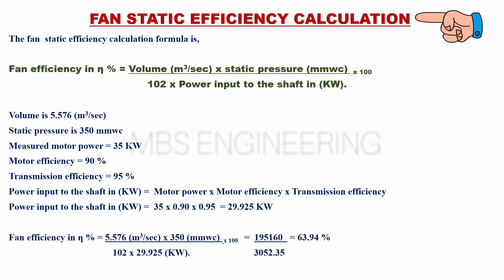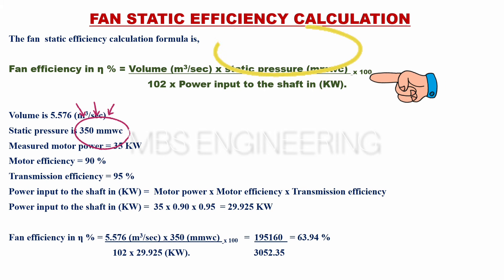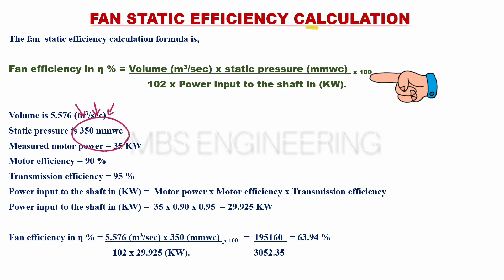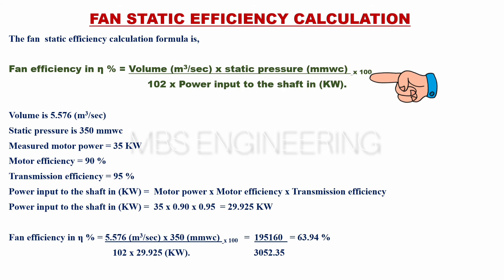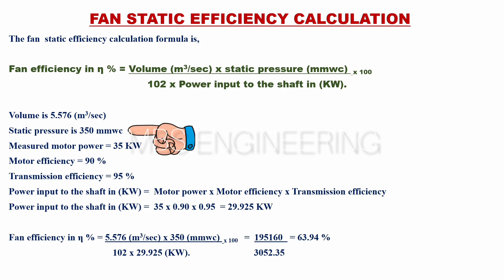We now calculate the fan static efficiency. The fan static efficiency formula is the same as the fan total efficiency formula, except that the outlet velocity pressure is not added to the fan static pressure. The fan static efficiency eta, in percentage, equals volume in cubic meters per second multiplied by static pressure in mmWC, multiplied by 100, divided by 102, into power input to the shaft in kilowatts. The given parameters are: volume = 5.576 m³/s and static pressure = 350 mmWC.